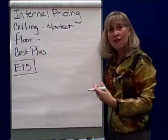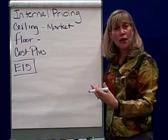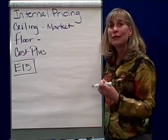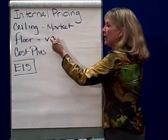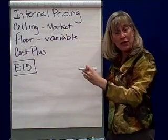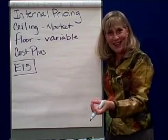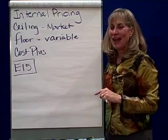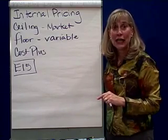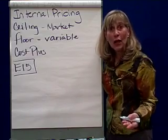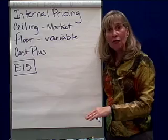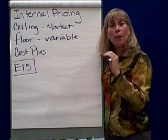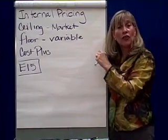The floor says if I am a selling division transferring from one division to another, I need to recoup my costs. In the short run, I need to recoup at least my variable costs, because if I make the product, I do pay those costs. Fixed costs sometimes come into consideration and sometimes don't. The determining factor is whether we're past breakeven. If we're past breakeven, fixed costs are no longer relevant because we've already covered them. So if I'm only transferring products above the breakeven point, variable costs are the only ones I need to consider.